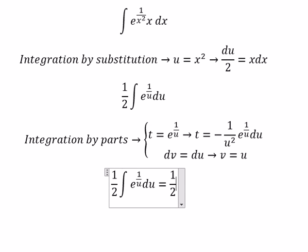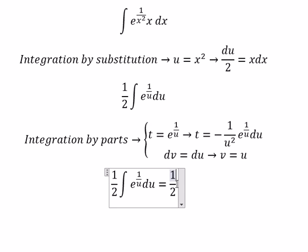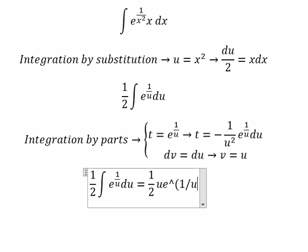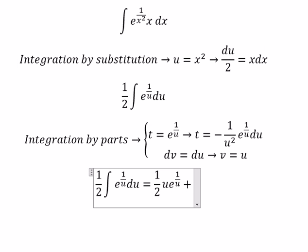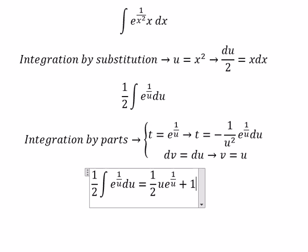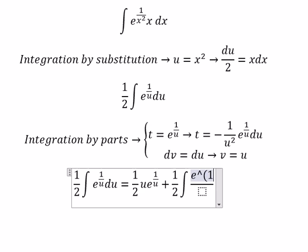So we get one half multiplied with t times v and the integral of v dt. This one we have a negative, so we get a positive. And we have one half multiplied with e to the power of 1 over u.